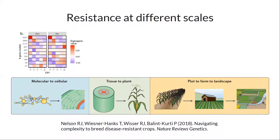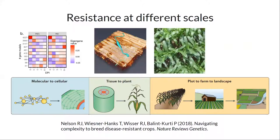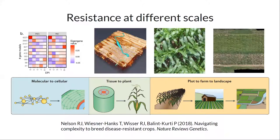On the molecular side, we use an RNA-seq experiment to see what genes, pathways, and molecular mechanisms are important at a given time. On the tissue side, the pathogen is moving through a three-dimensional leaf — it's not homogenous — so we've been doing histopathology experiments to study that. On the plot level, gene mapping and looking at resistance in the field on a row-to-row basis. And on the landscape level, just in the past two years, moving to aerial photography and drones.